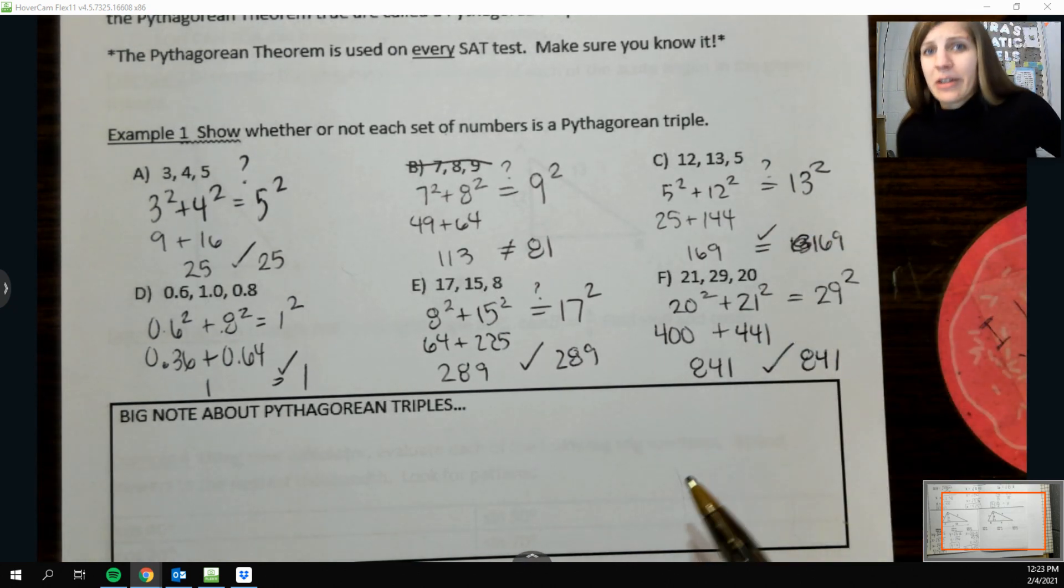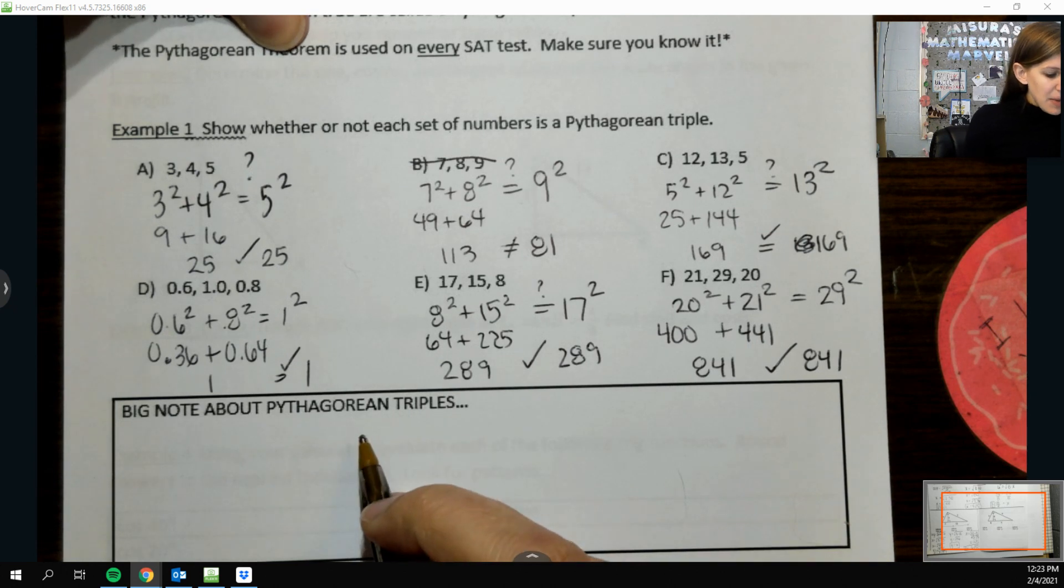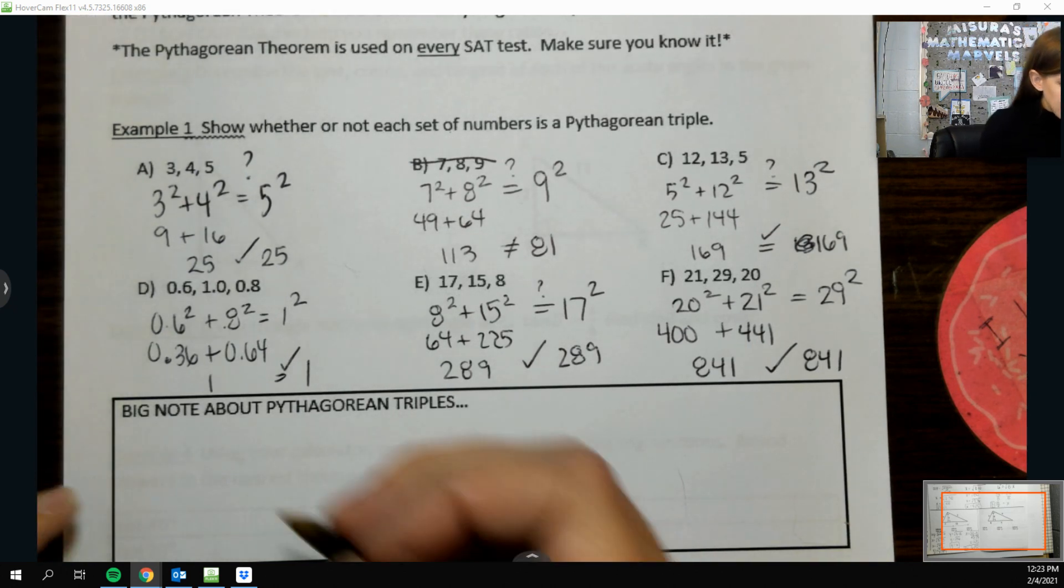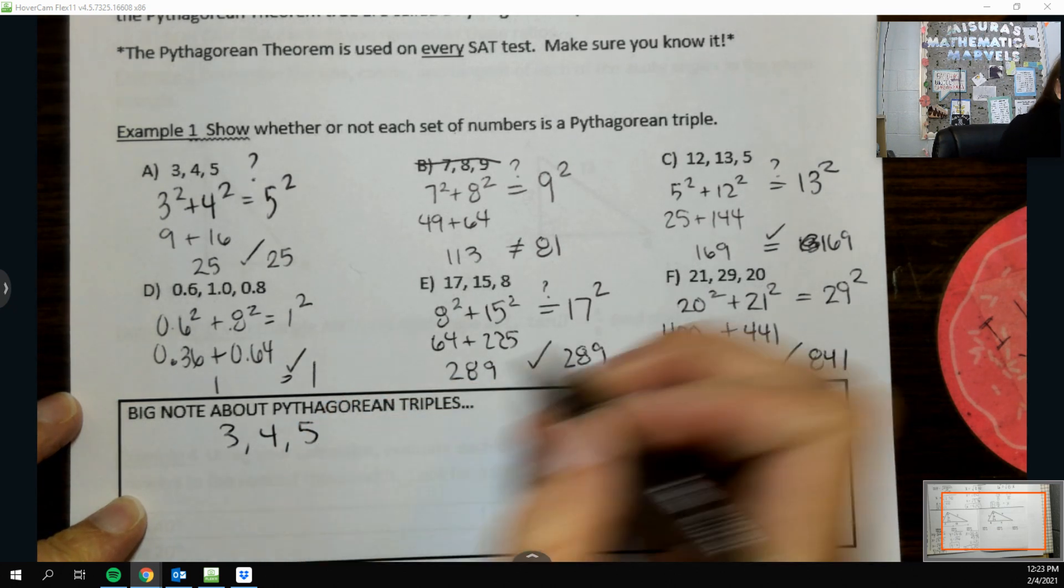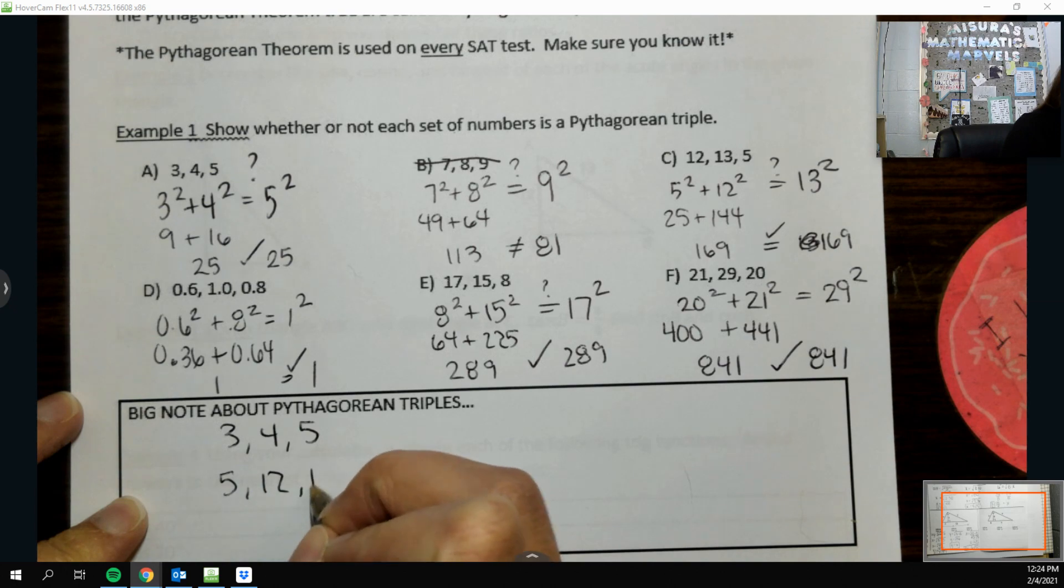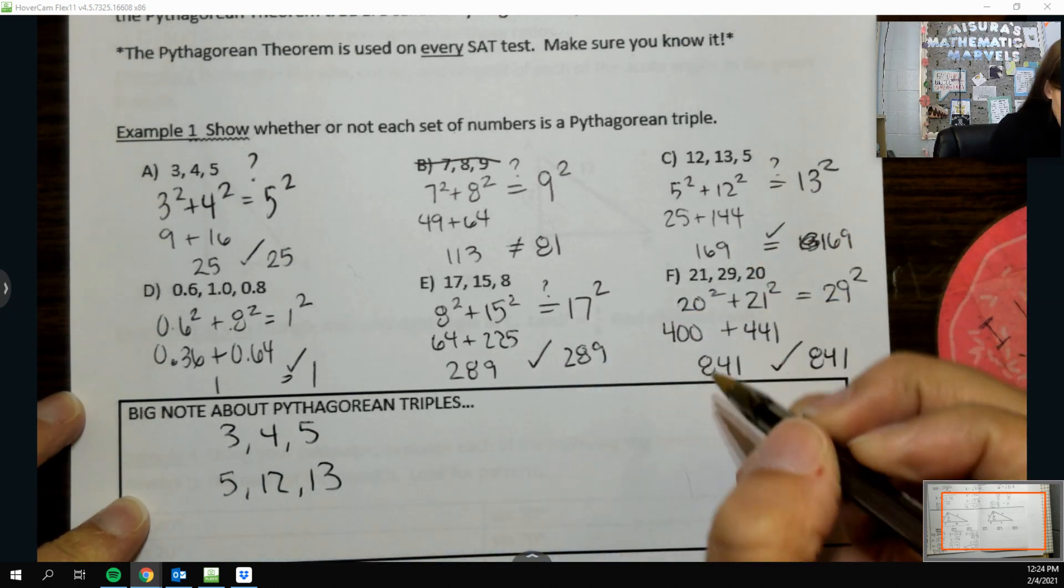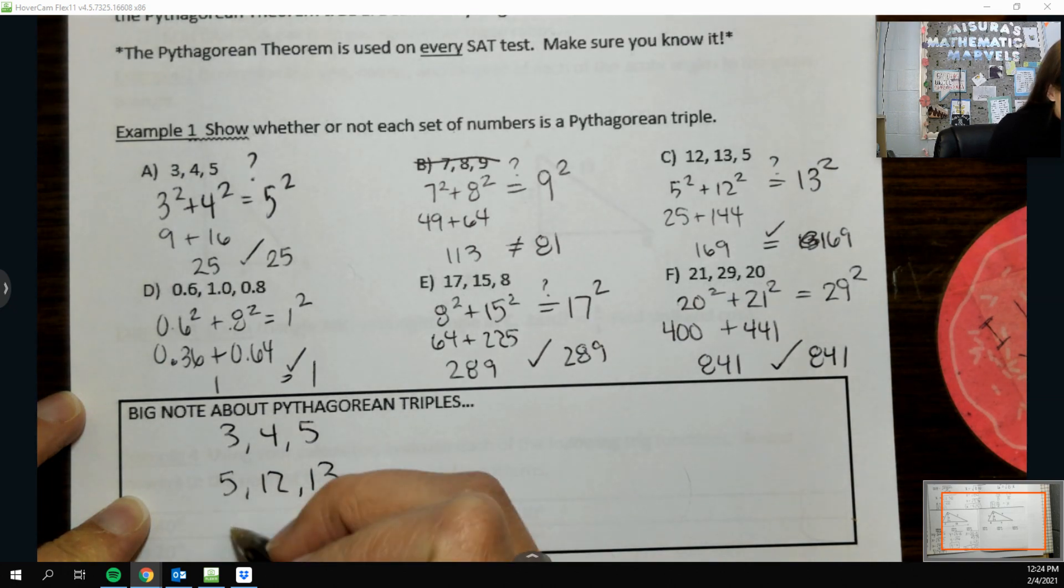I kind of knew those were Pythagorean triple. I was a little unsure. But again, that's where it's like the more you know, the more you have it memorized, the less time you have to spend going into your calculator and any time saved is good.